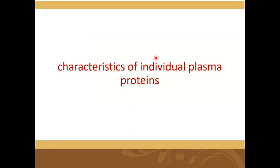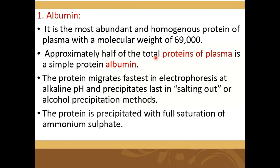Characteristics of individual plasma proteins — Albumin. It is the most abundant and homogeneous protein of plasma, with a molecular weight of 69,000 daltons. Half of the total plasma proteins consist of albumin, which is a simple protein. The protein migrates fastest in electrophoresis at alkaline pH and precipitates last in the salting out or alcohol precipitation method.